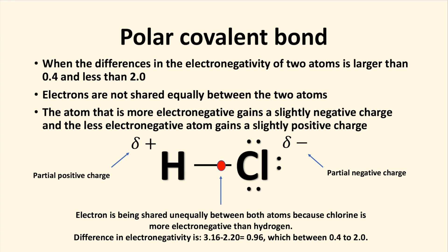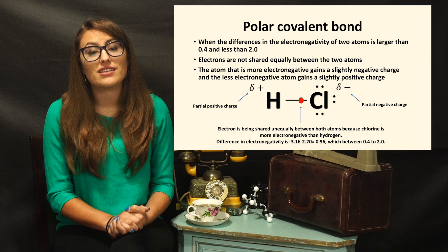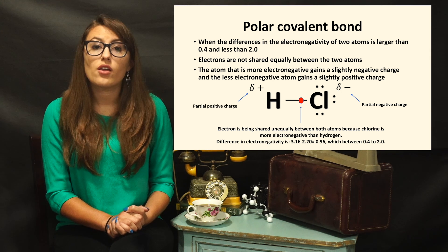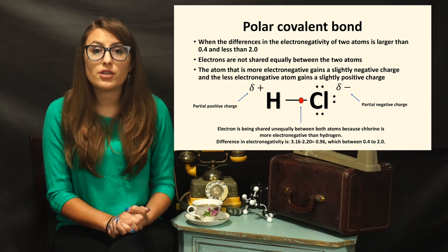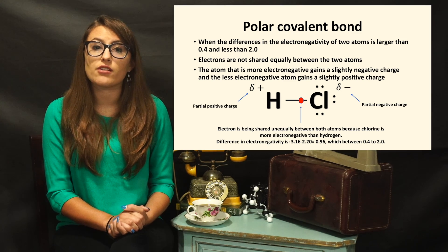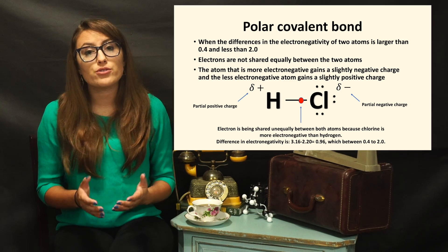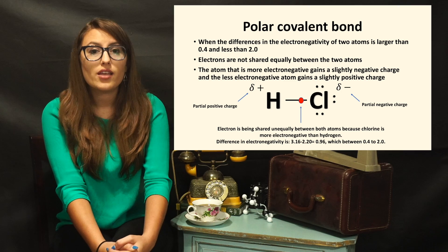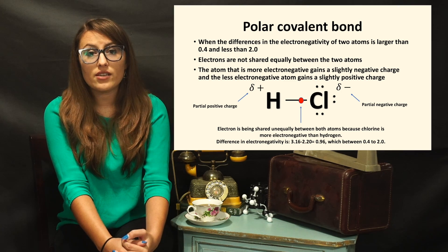Since electrons have a negative charge, the atom that is more electronegative gains a slightly negative charge and the less electronegative atom gains a slightly positive charge. This is called a dipole moment because you are inducing a positive and negative pole on a bond similar to the north and south pole. The larger the difference in electronegativity, the larger the dipole and the more polar the bond becomes.